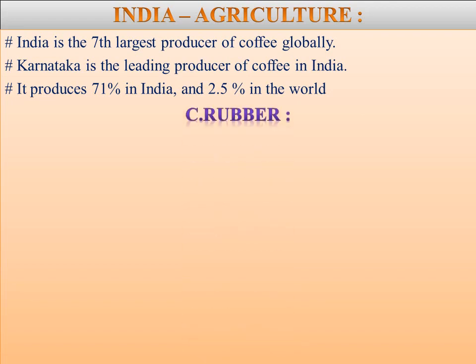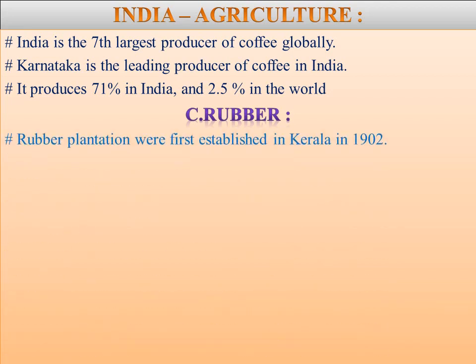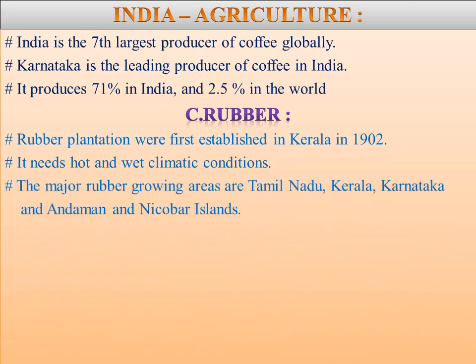Next we are going to learn about Rubber. Rubber plantations were first established in Kerala in 1902. It needs hot and wet climatic conditions — temperature above 20 degrees centigrade and rainfall above 300 cm. Most of the land under rubber belongs to small landholders. The major rubber growing areas are Tamil Nadu, Kerala, Karnataka, and Andaman and Nicobar Islands.